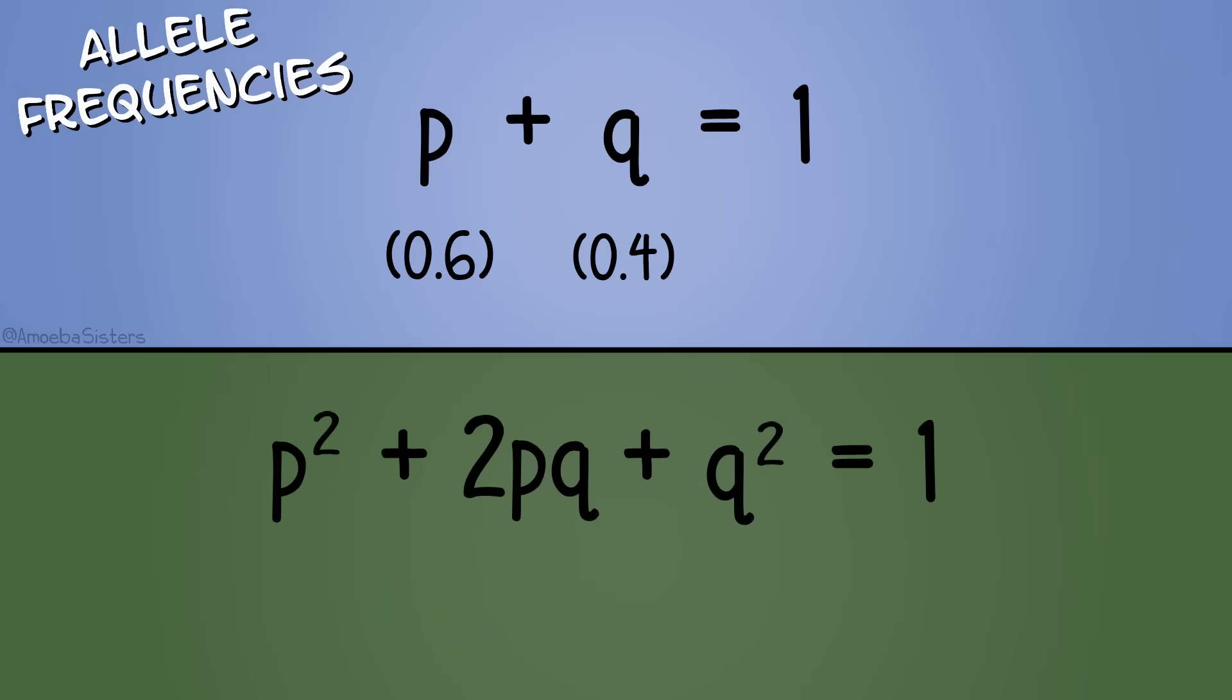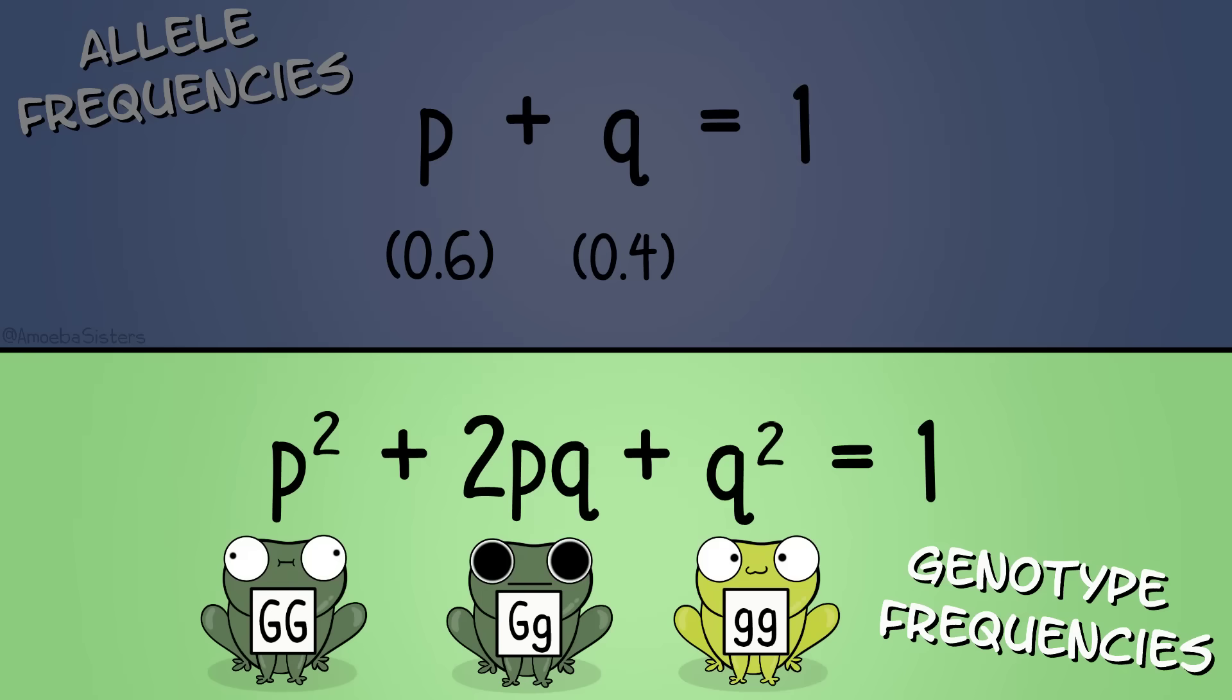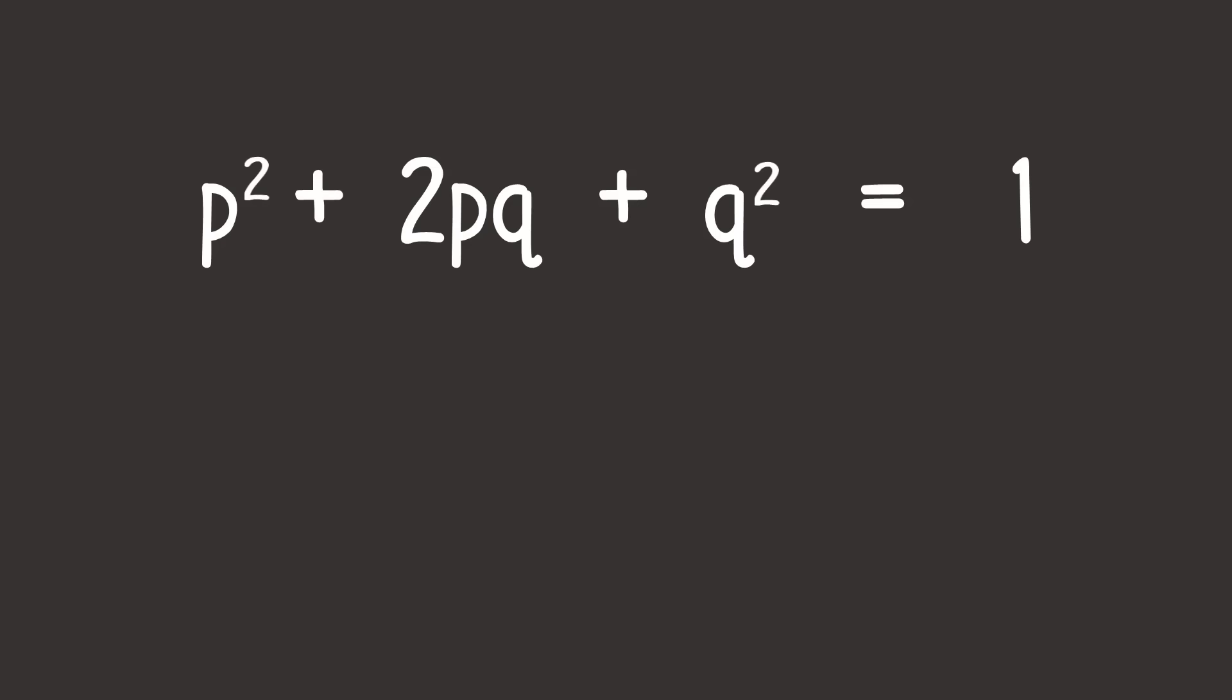So this equation, p plus q equals 1, is for those allele frequencies. But what if I wanted to know the genotype frequencies, meaning I wanted to know the frequency of frogs that are homozygous dominant, which is big G big G, heterozygous, which is big G little g, or homozygous recessive, which is little g little g. Then I can use this other Hardy-Weinberg equilibrium equation. p² + 2pq + q² equals 1.